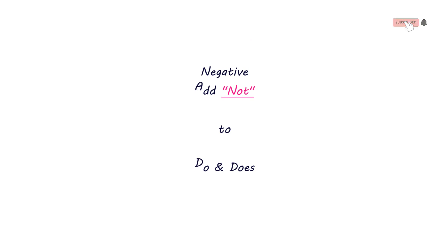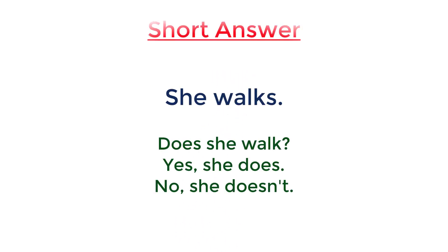In simple present tense for changing your sentence to negative, just add not to do or does. For short answer, look at here. She walks. Does she walk? Yes, she does. No, she doesn't. Add not to does. Be careful about punctuation after yes and no. You need comma.